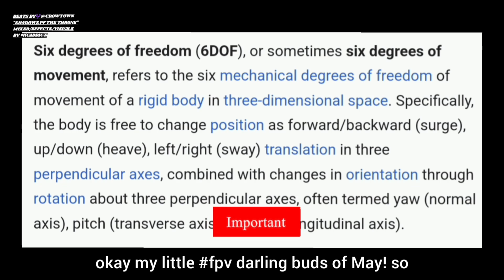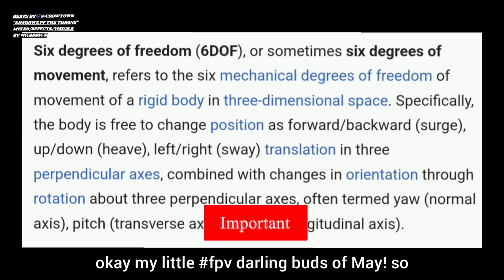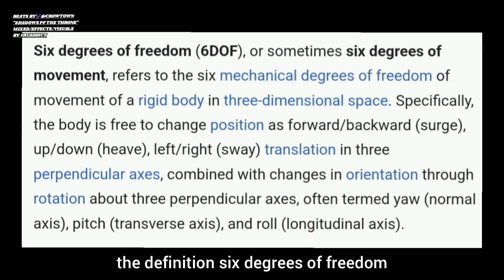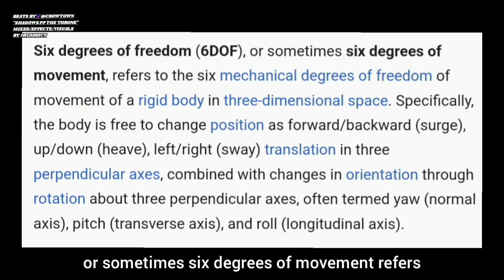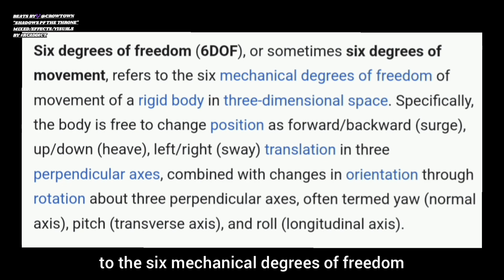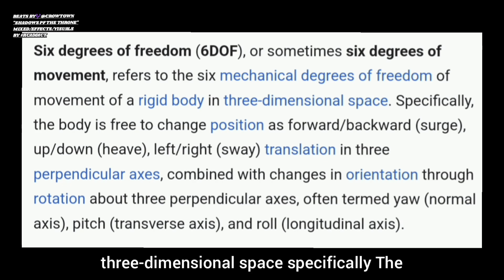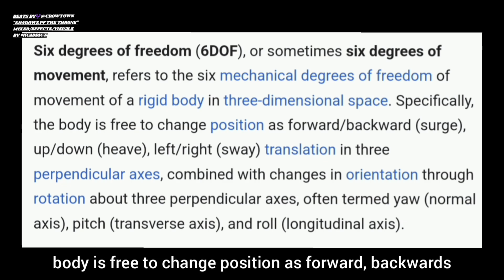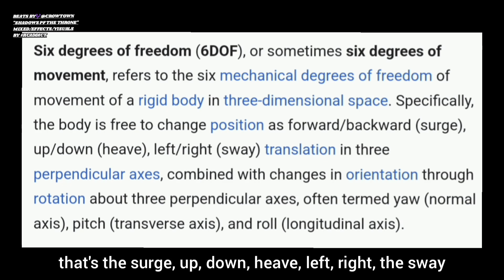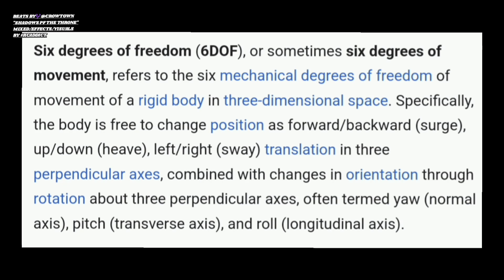So the definition: six degrees of freedom, or sometimes six degrees of movement, refers to the six mechanical degrees of freedom of movement of a rigid body - the drone - in three-dimensional space. Specifically, the body is free to change position as forward/backwards (that's the surge), up/down (heave), left/right (the sway) - translation in three perpendicular axes.